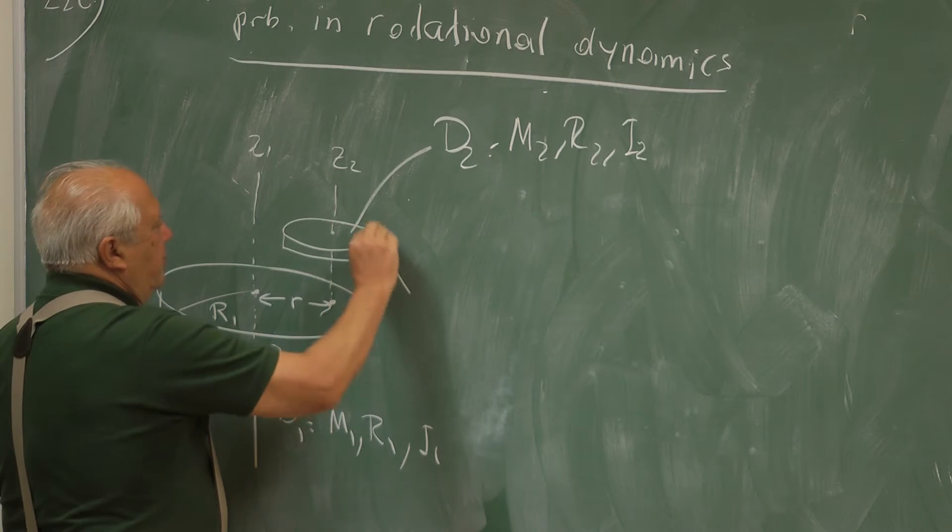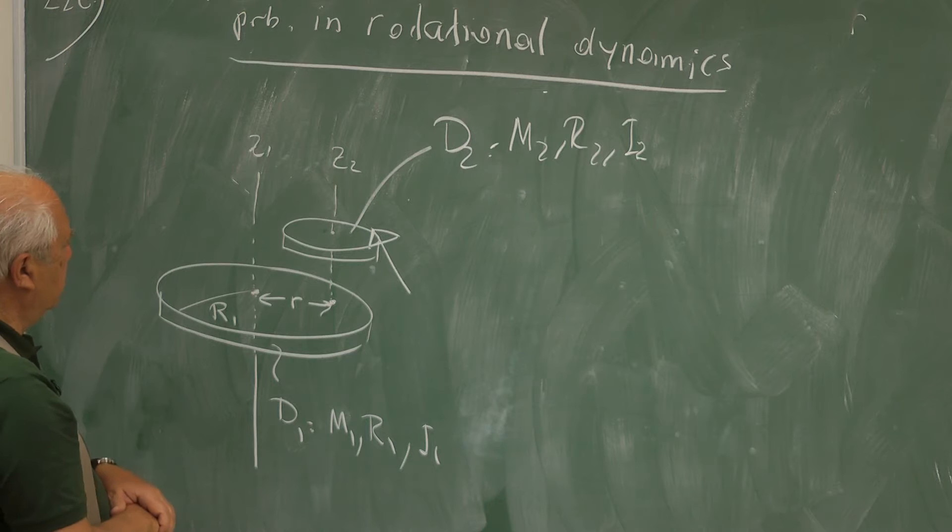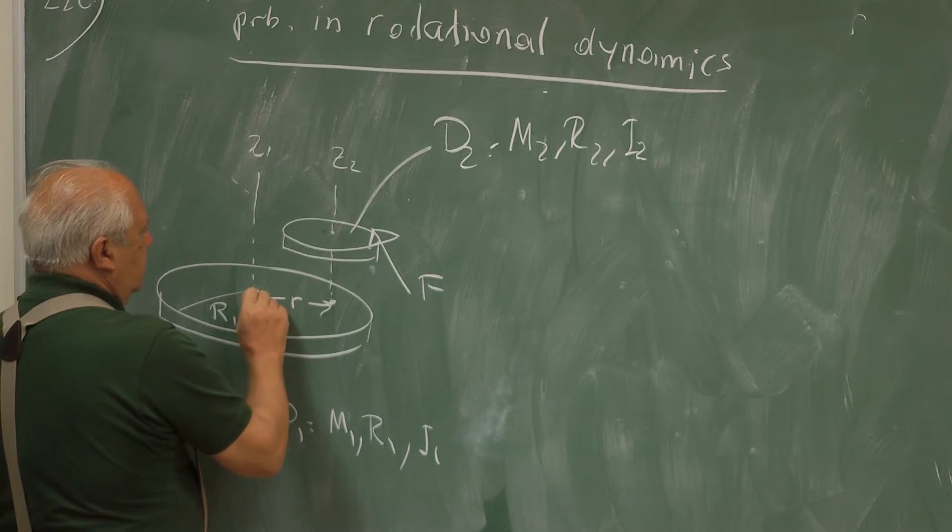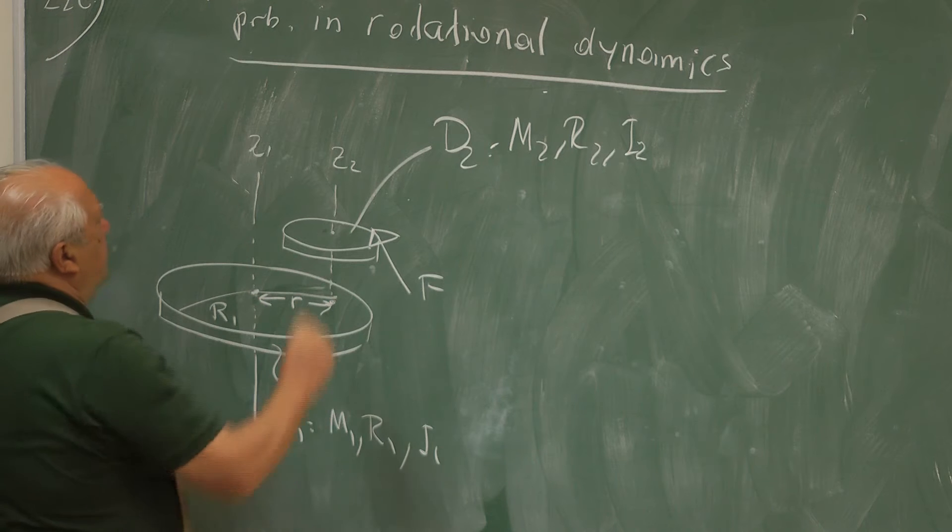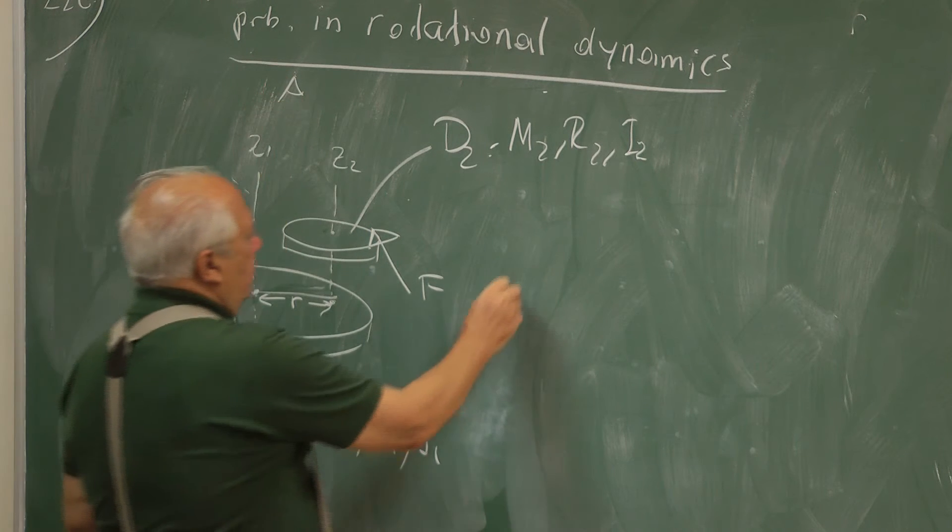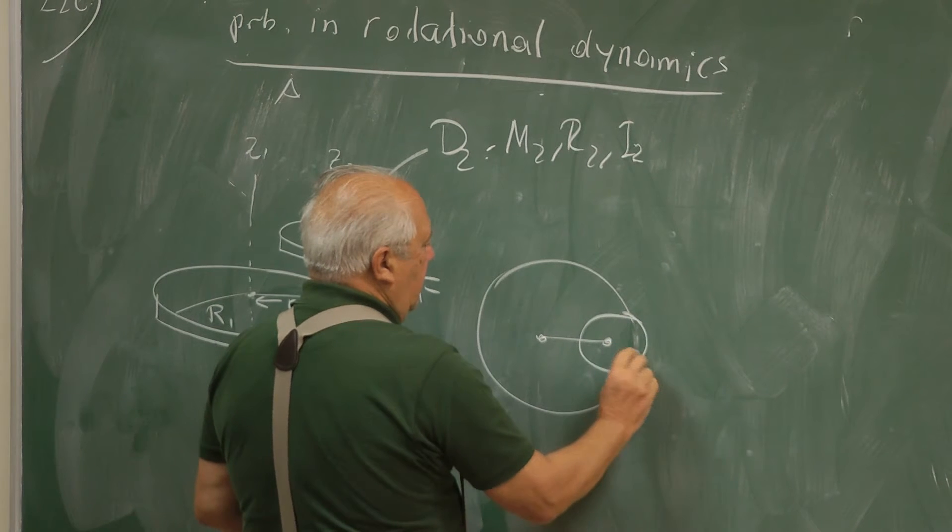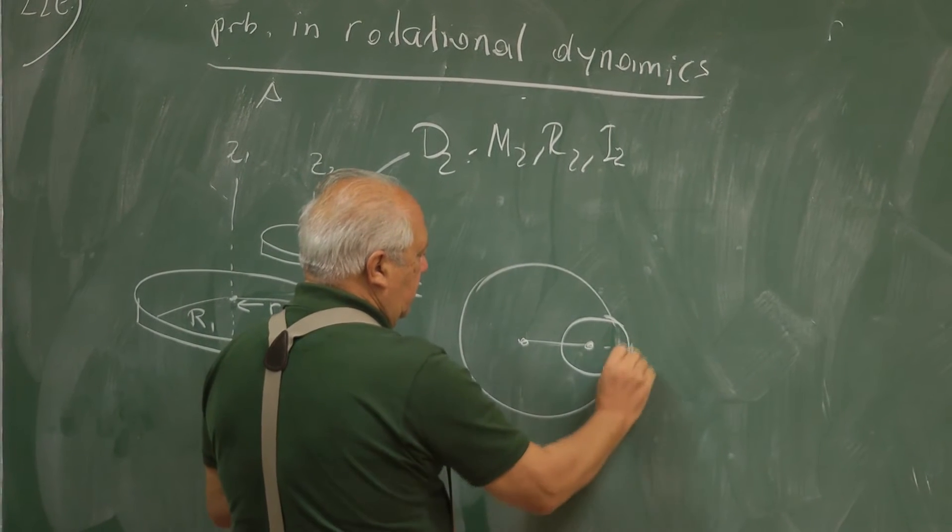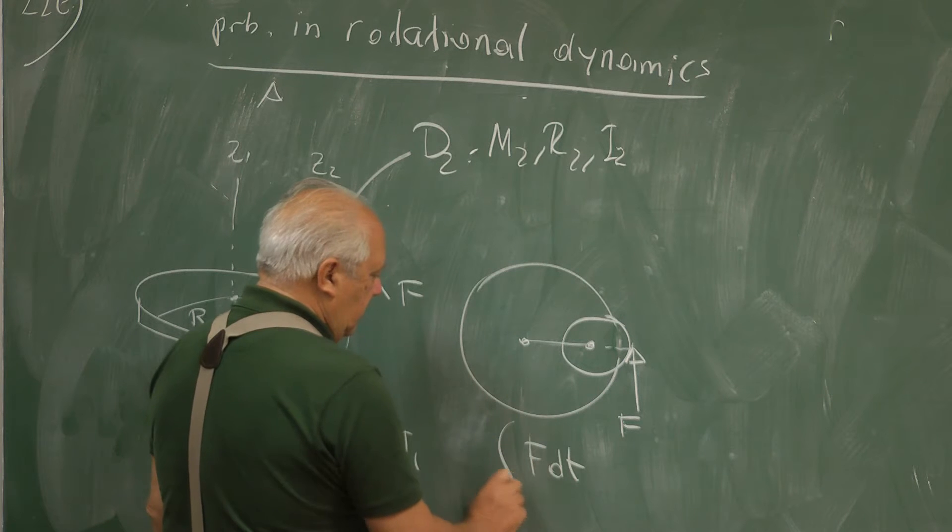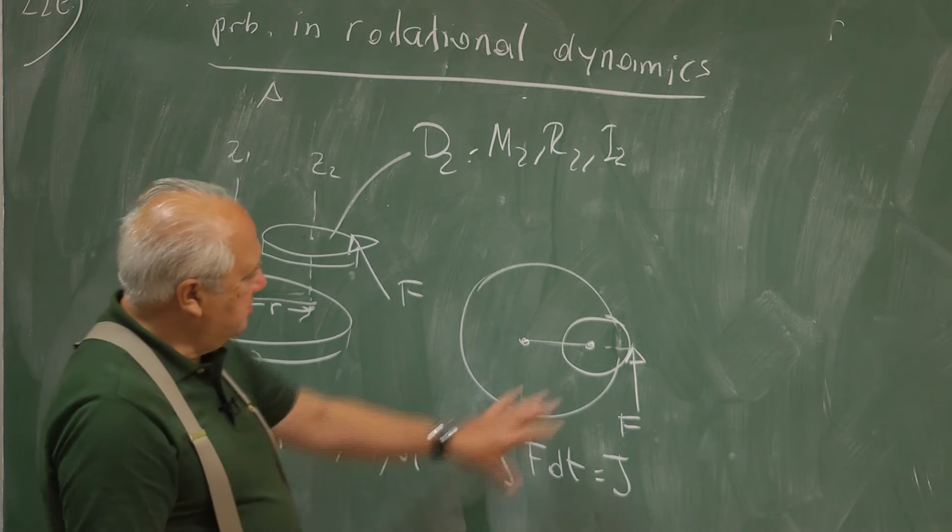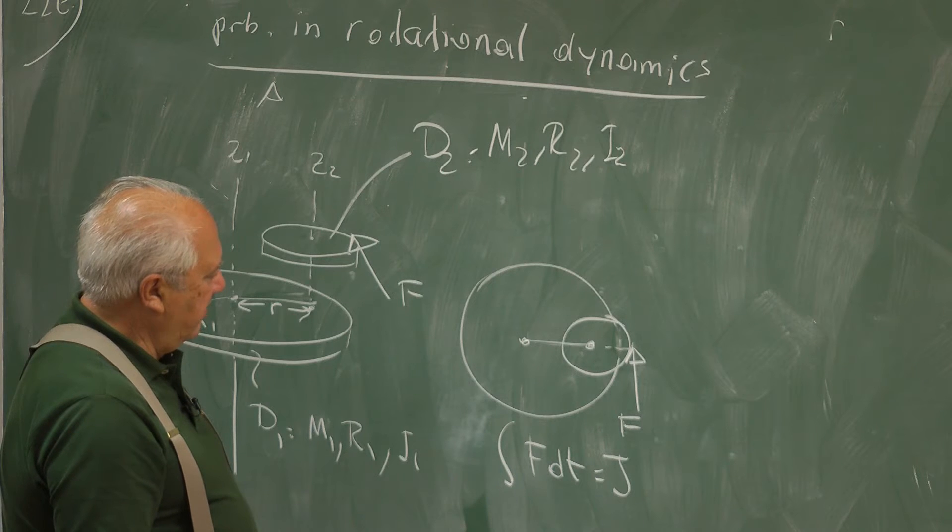We apply a force F tangential to disk D2, such that this force F is perpendicular to the line joining to this line. So if you look from top, we will see that here is the big disk and here is the small disk. And a force F is applied for a short time such that F DT is J impulse.